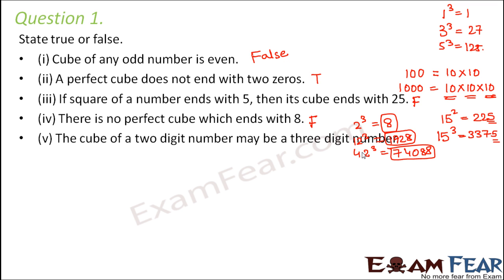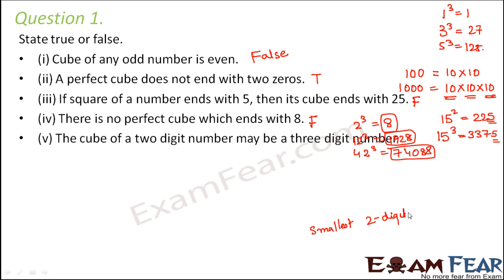The cube of a 2-digit number may be a 3-digit number. Let's talk about this. The smallest 2-digit number is 10. When you cube 10 — 10 times 10 times 10 — that is 1000, a 4-digit number. So even for the smallest 2-digit number, its cube is already a 4-digit number.